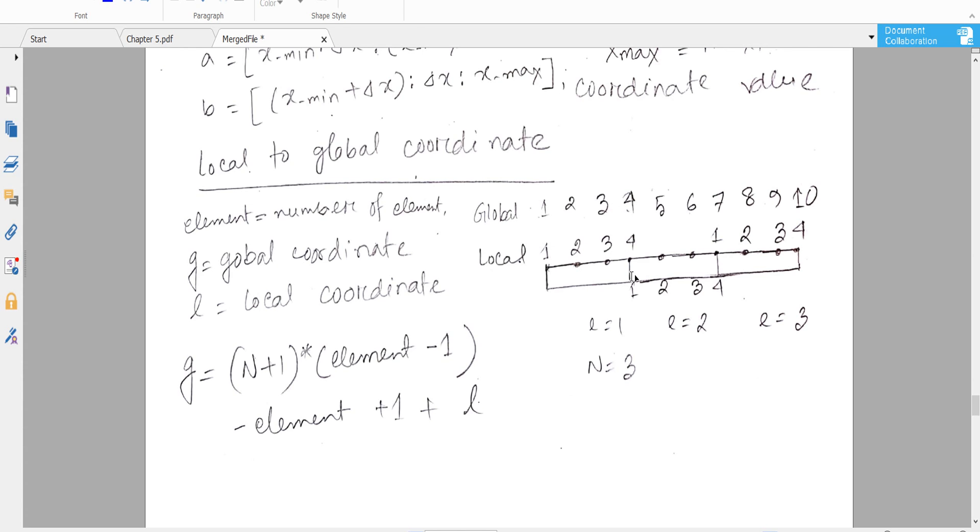2, 3, and this coordinate 4, and 1 becomes global coordinate 4, and this is 5, this is 6, and this one 1, 4 comes as 7, 8, 9, 10. We have to produce the global coordinate numbers.